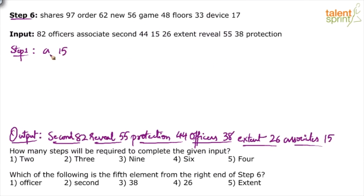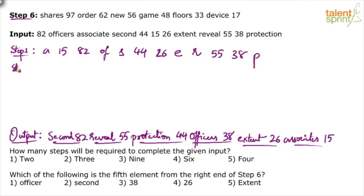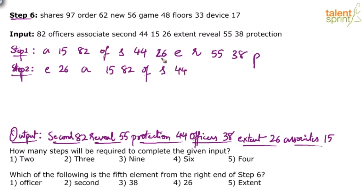In step one, bring 'associates' and 15 to the first positions, then push everything else aside: 82, officers, second, 44, 26, extent, reveal, 55, 38, protection. In step two, 'extent' and 26 are brought to the front positions. Associates and 15 come inside. The remaining elements are: 82, officers, second, 44, reveal, 55, 38, protection.